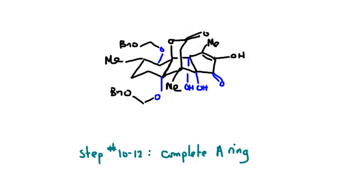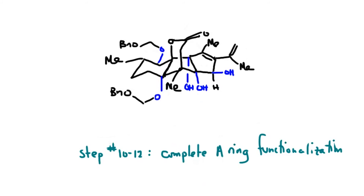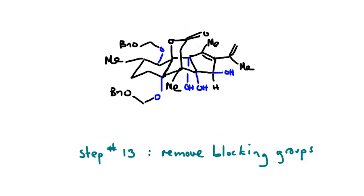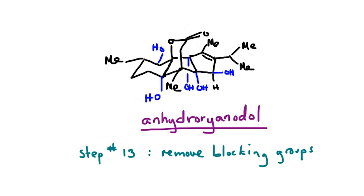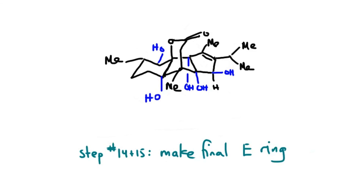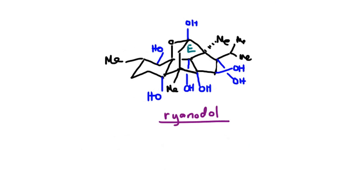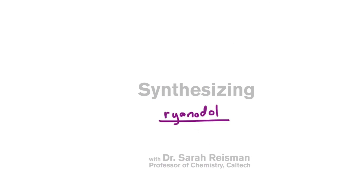Completion of the synthesis becomes much easier. First, we incorporate three more carbons and make a molecule known as anhydroryanodol. Then from anhydroryanodol, we use two additional synthetic reactions — an oxidation reaction and a cyclization reaction — which allows us to form the fifth and final ring, the E ring of ryanodol. At the end of the day, we've made five rings, brought in seven hydroxyl groups, and achieved a 15-step synthesis of ryanodol.